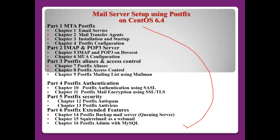Part one will focus on MTA Postfix — there are four chapters. Part two will be IMAP and POP3 server, and I will use Dovecot and show you how to set up MUA on Linux and Windows. Part three is about Postfix analysis and access control, and here I will introduce the program Mailman as a mailing list program on Linux.